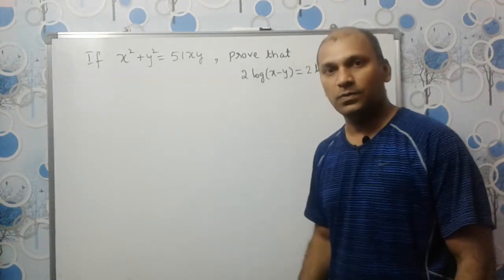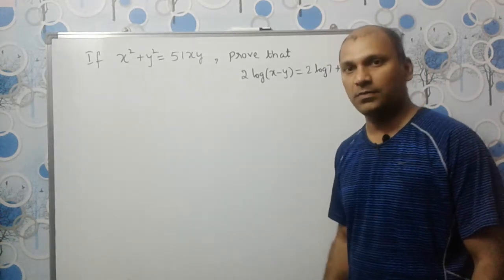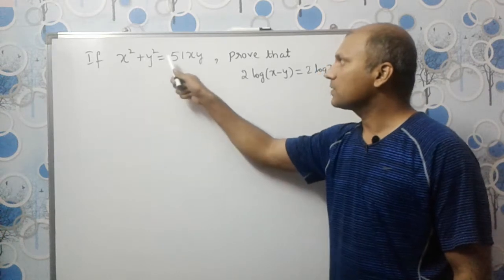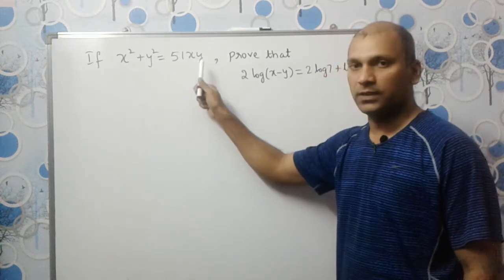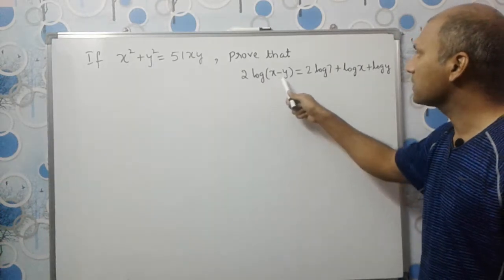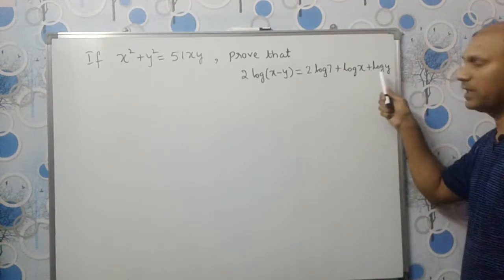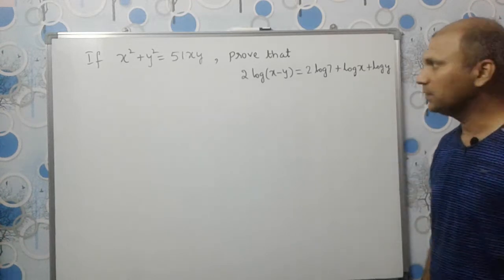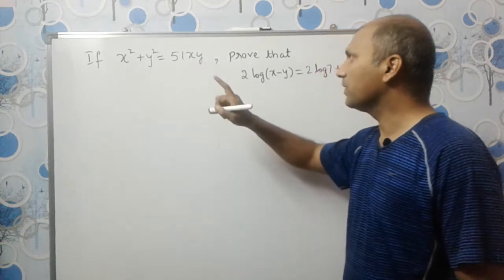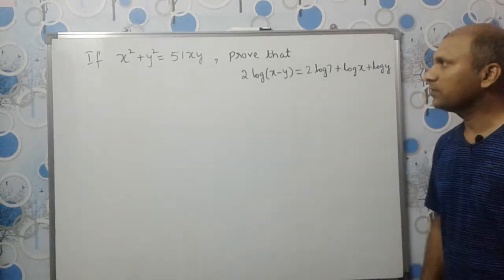Hello students, in this video we are going to solve this problem — one of my subscribers sent me this request. Given x² + y² = 51xy, we should prove that 2·log(x - y) = 2·log 7 + log x + log y.